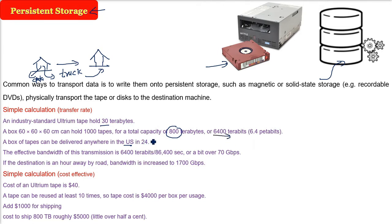This 6.4 petabits have to be transferred in 24 hours. 24 hours is 24 into 60 into 60 seconds. Now, divide this 6400 terabits by the seconds, you will get 70 gbps. So if you are transferring the data physically through a truck, that will be 70 gbps.